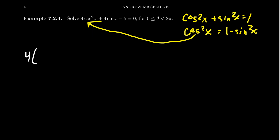Replace the cosine squared with 1 - sin²x. We keep the 4sinx and the -5, so it equals 0. Notice we're solving this on the domain 0 to 2π, so we're solving for radians—just one rotation of the unit circle.